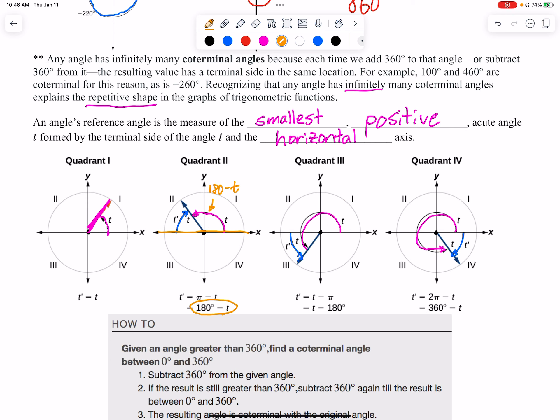All right, quadrant three. Think about this. Okay, well, if I stop the angle right there, this angle right here is just 180°, right? Going from the positive x-axis to the negative x-axis. That's 180°.